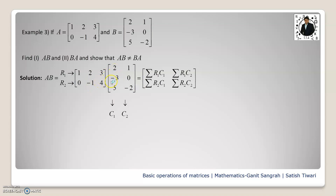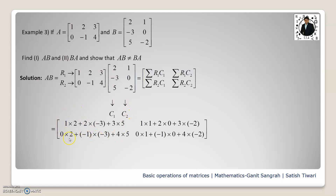Continuing the computation with elements including 2, minus 1, minus 3, 4, and 5, and then 0 into 1, minus 1 into 0, and 4 into minus 1. For the second row times second column: 0 into 1, then minus 1 into 0, then 4 into minus 2. After computing these, we get a 2 by 2 matrix — because A was 2 by 3 and B was 3 by 2, so the resulting matrix AB has order 2 by 2.